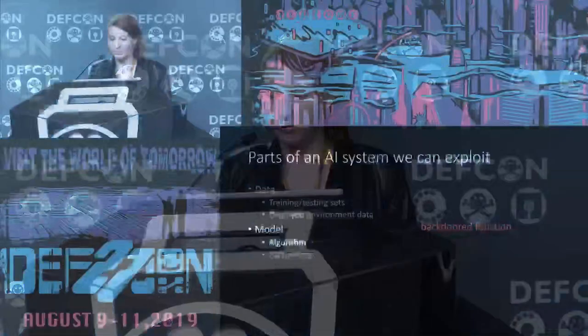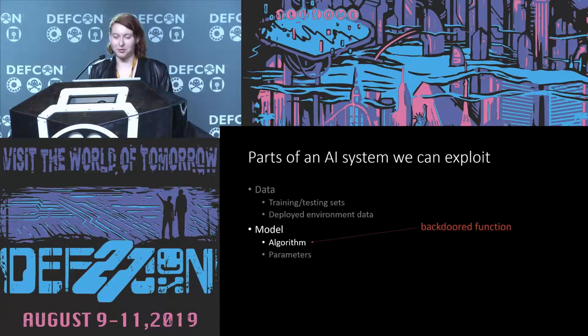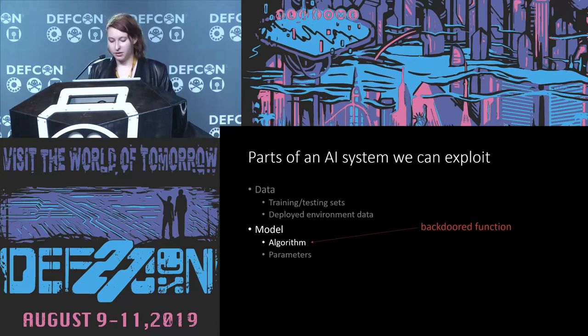We can also do something along the lines of the infamous JavaScript NPM hack last year, where bad actors got hold of an NPM maintainer's account and used it to push a rogue version of a popular programming tool that ended up scraping a bunch of people's NPM login tokens. Since most AI developer software is open source — like scikit-learn — it's possible that a bad actor could inject bad versions of functions that would alter the behavior of an AI model during deployment, which is kind of scary.